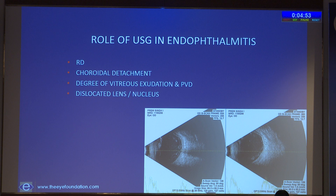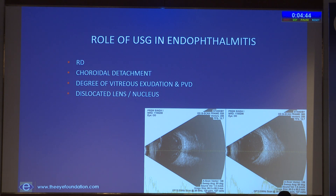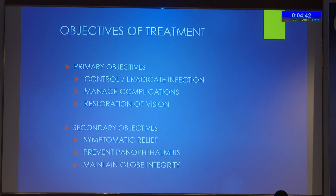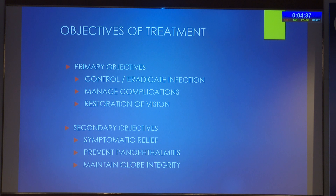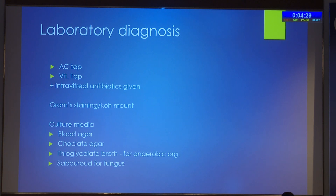Ultrasound preoperatively is very important to know the degree of vitreous exudates, and to determine if there is any retinal detachment or choroidal detachment, noting the quadrant in which it is present. The objectives of treatment should be to eradicate or control the infection and manage its complications, and to restore vision. If not possible, the secondary objective should be to relieve the patient's symptoms and prevent panophthalmitis.